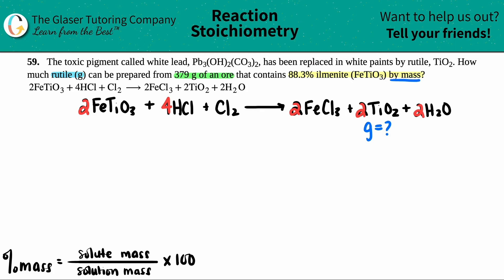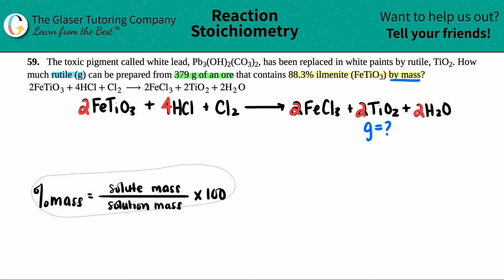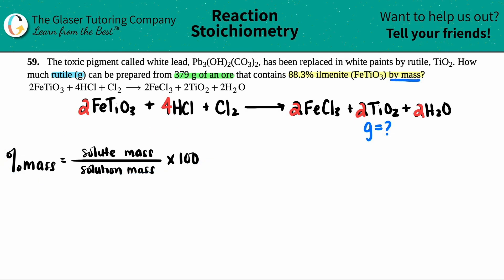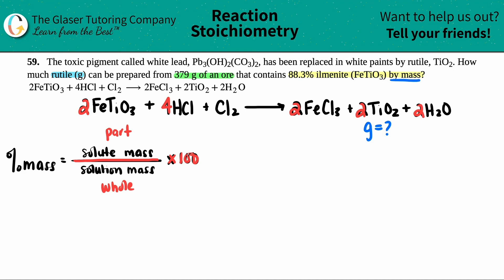If they give you a percentage and they're talking about by mass — a percent mass — we know we have to use this formula. The percent mass formula is always part divided by whole times 100. With percent mass, you could think of it as the part and the whole. We just have to find out what the part is and what the whole is. They told us we have a 379 gram ore — that's the whole total thing — and the ore contains 88.3% ilmenite.